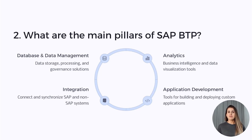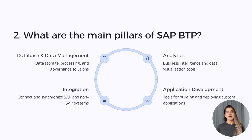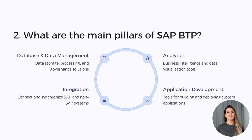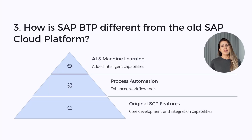Question two: What are the main pillars of SAP BTP? The core components are database and data management, analytics, application development and automation, and integration. I've mainly worked with the Integration Suite and SAP HANA Cloud, especially while building extensible apps and integrating external systems.